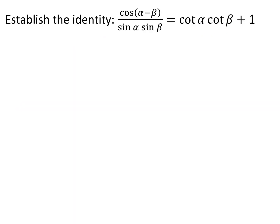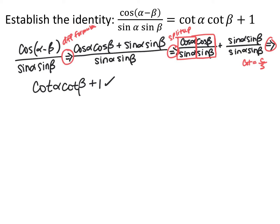We now have more identities to apply in establishing identity problems. To establish that cosine(alpha − beta) over (sine alpha sine beta) equals cotangent alpha cotangent beta plus 1: start with the left side and apply the difference formula to the numerator, giving (cosine alpha cosine beta + sine alpha sine beta) over (sine alpha sine beta). Split into two fractions: cosine alpha cosine beta over sine alpha sine beta, plus sine alpha sine beta over sine alpha sine beta. The second part equals 1, and the first splits into (cosine alpha/sine alpha)(cosine beta/sine beta), which is cotangent alpha times cotangent beta.